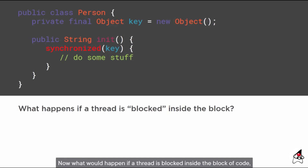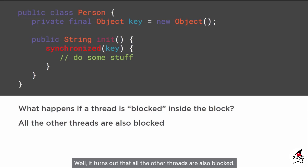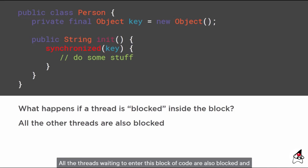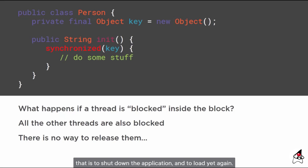What happens if a thread is blocked inside the synchronized block — meaning it is stuck due to a bug in the method preventing it from exiting? All other threads waiting to enter that block are also blocked, and there is no way in the JDK or JVM to release them. Most of the time, the only solution is to reboot the JVM — to shut down the application and launch it again. This is something we want to avoid at all costs.